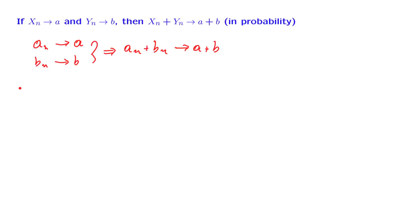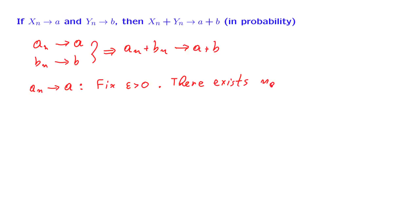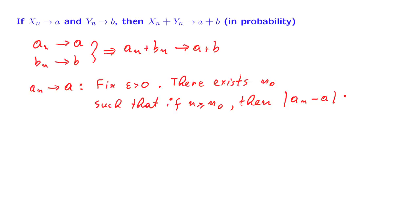Let us start with the definition of convergence. What does it mean that an converges to a? It means that if I fix some positive epsilon, then there exists some time n0 such that if n is bigger than n0, then an is close to a in the sense that this difference is less than epsilon. This is true for any positive epsilon, so if instead of epsilon I take epsilon over 2, this will also be true.